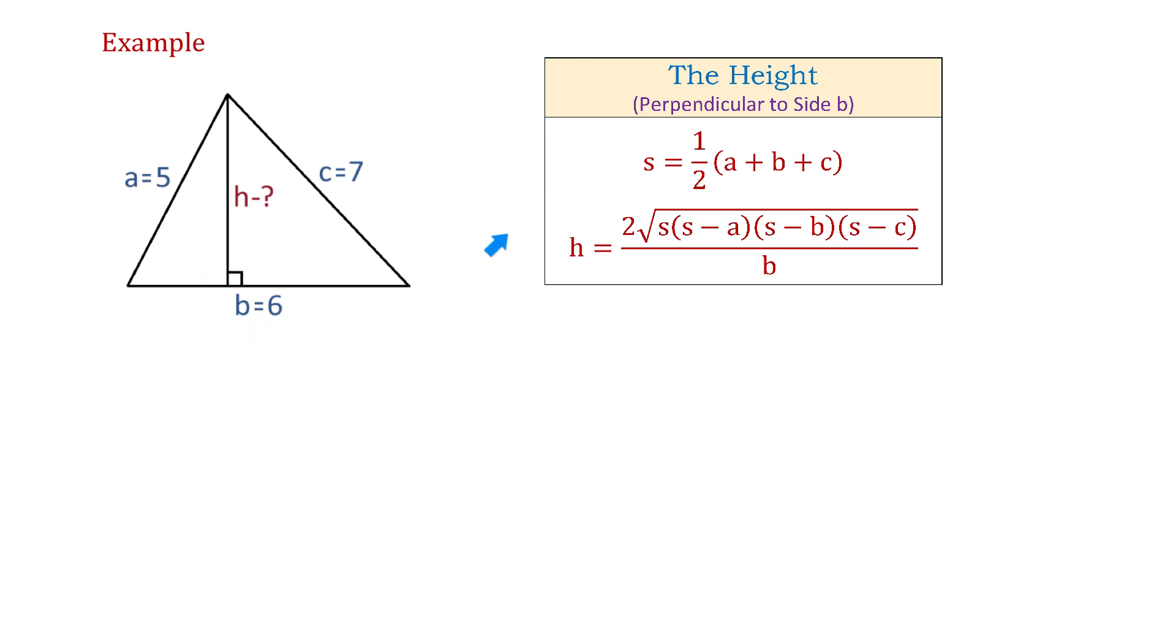In the first step, we will find s. So, s equals one-half times (5 + 6 + 7). Then, s equals 9.